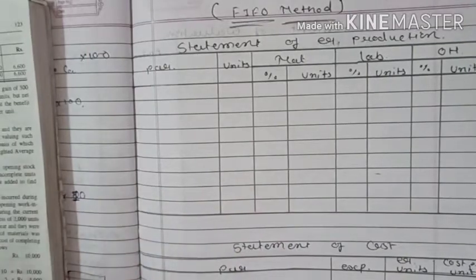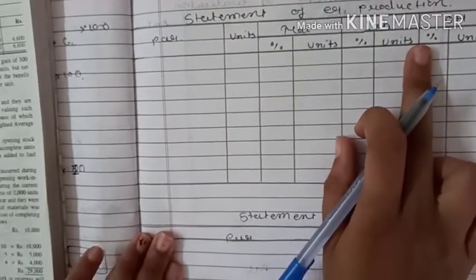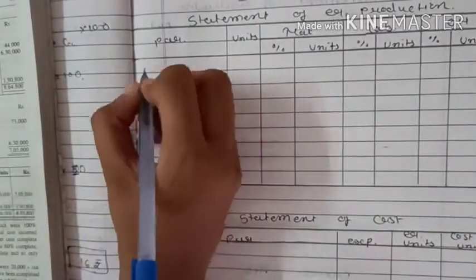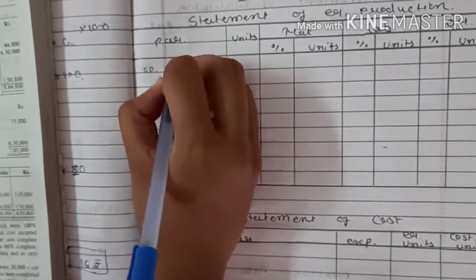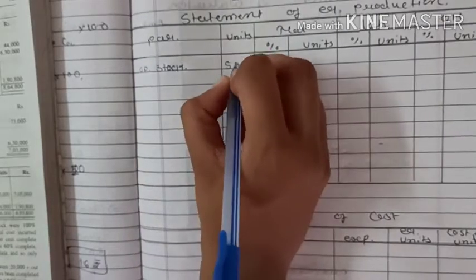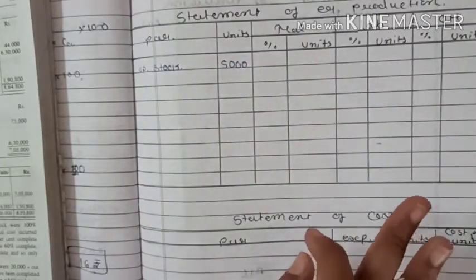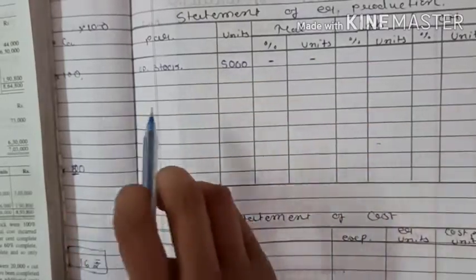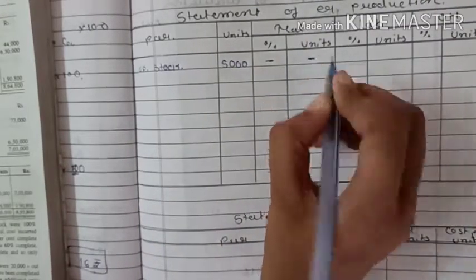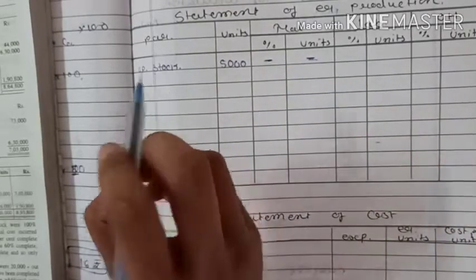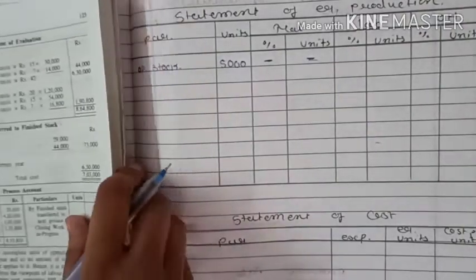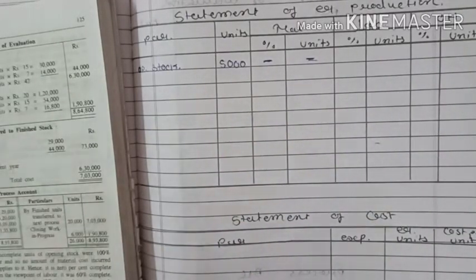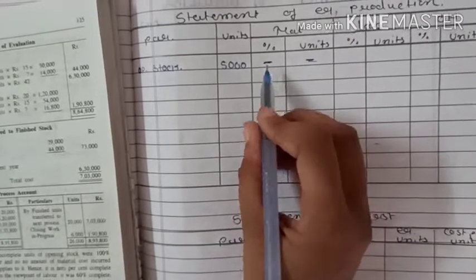We are solving the opening stock. This is a statement of equivalent production. When opening stock is given, first we write down the opening stock — 5,000 units. The level of completion is given. For material, it is 100%, which means it becomes nil, because 100% material is already completed — all material has been used. So while accounting for opening stock, it becomes nil.